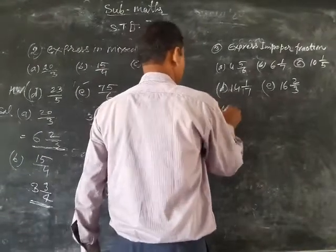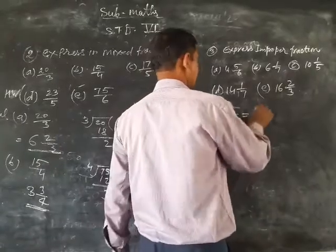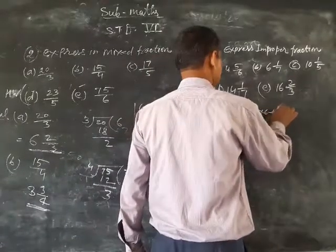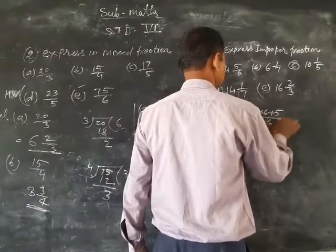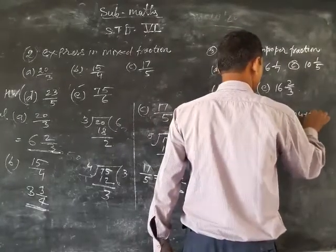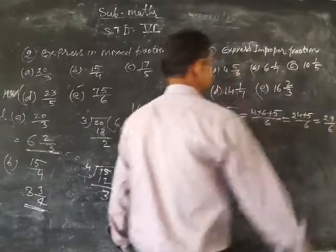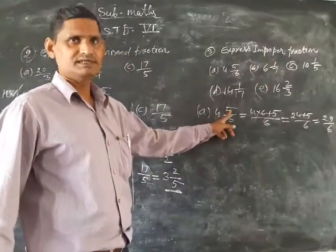Part a: 4 and 5 upon 6 equals 4 into 6 plus 5 upon 6. That's 24 plus 5 upon 6, equals 29 upon 6. This is whole times denominator plus numerator.